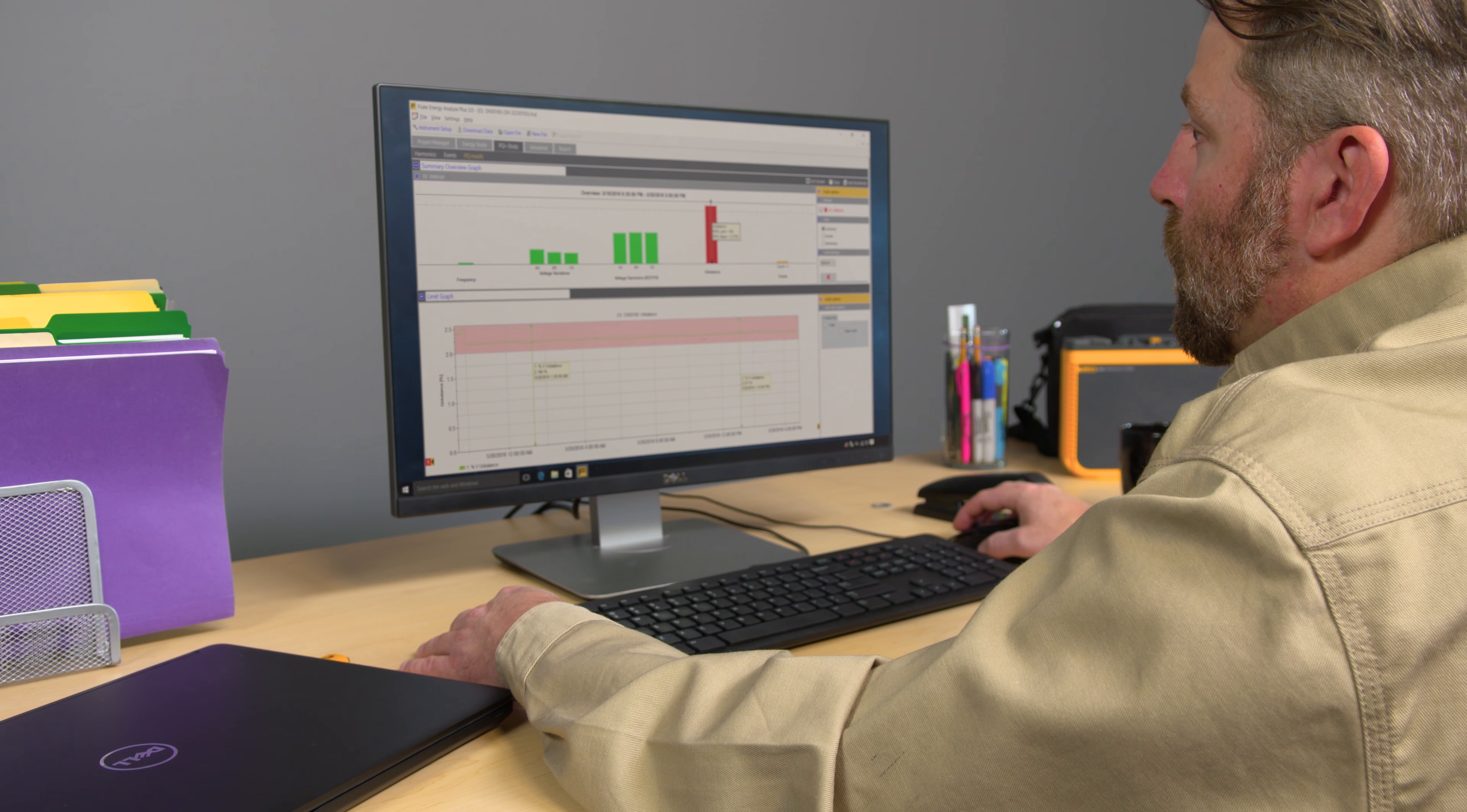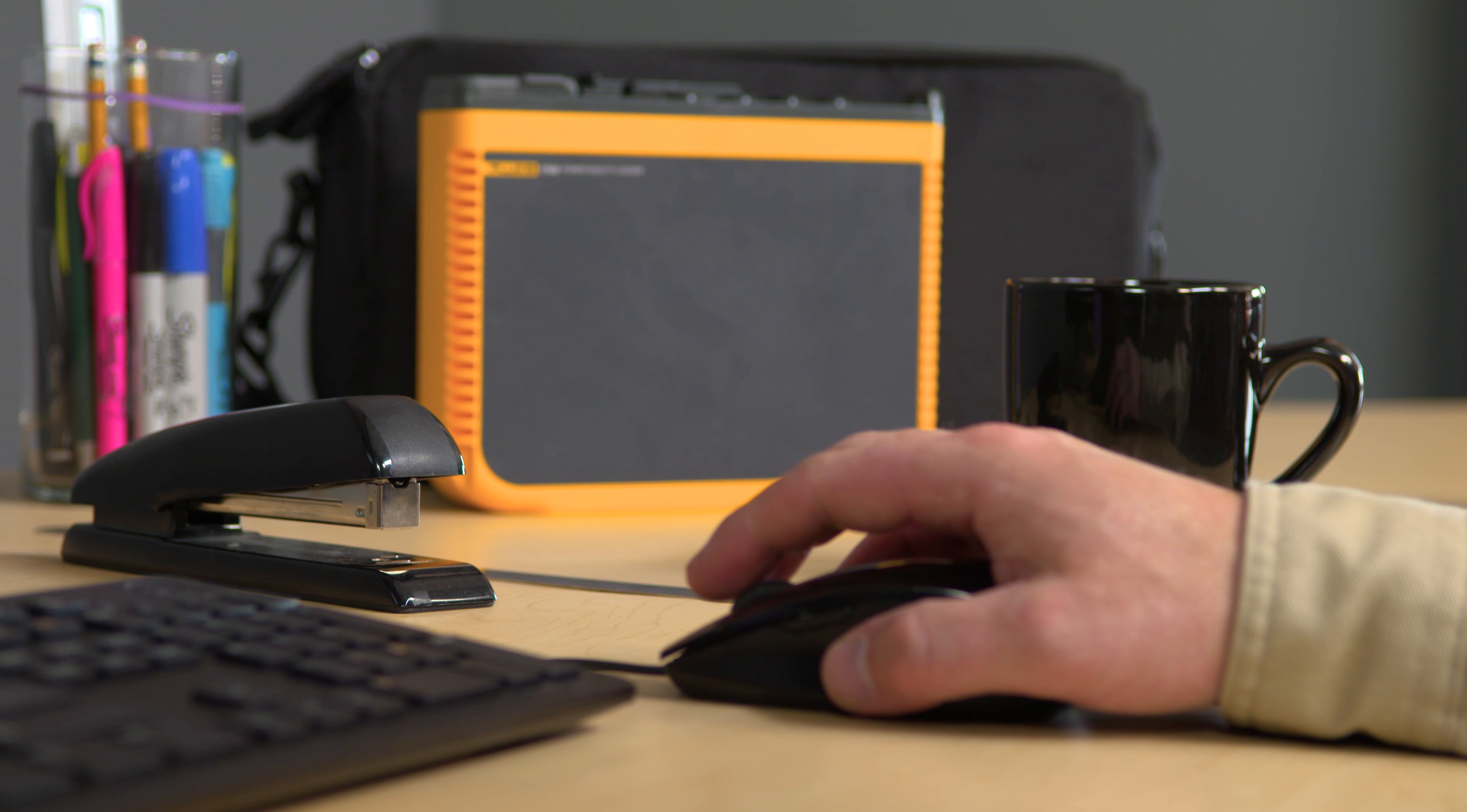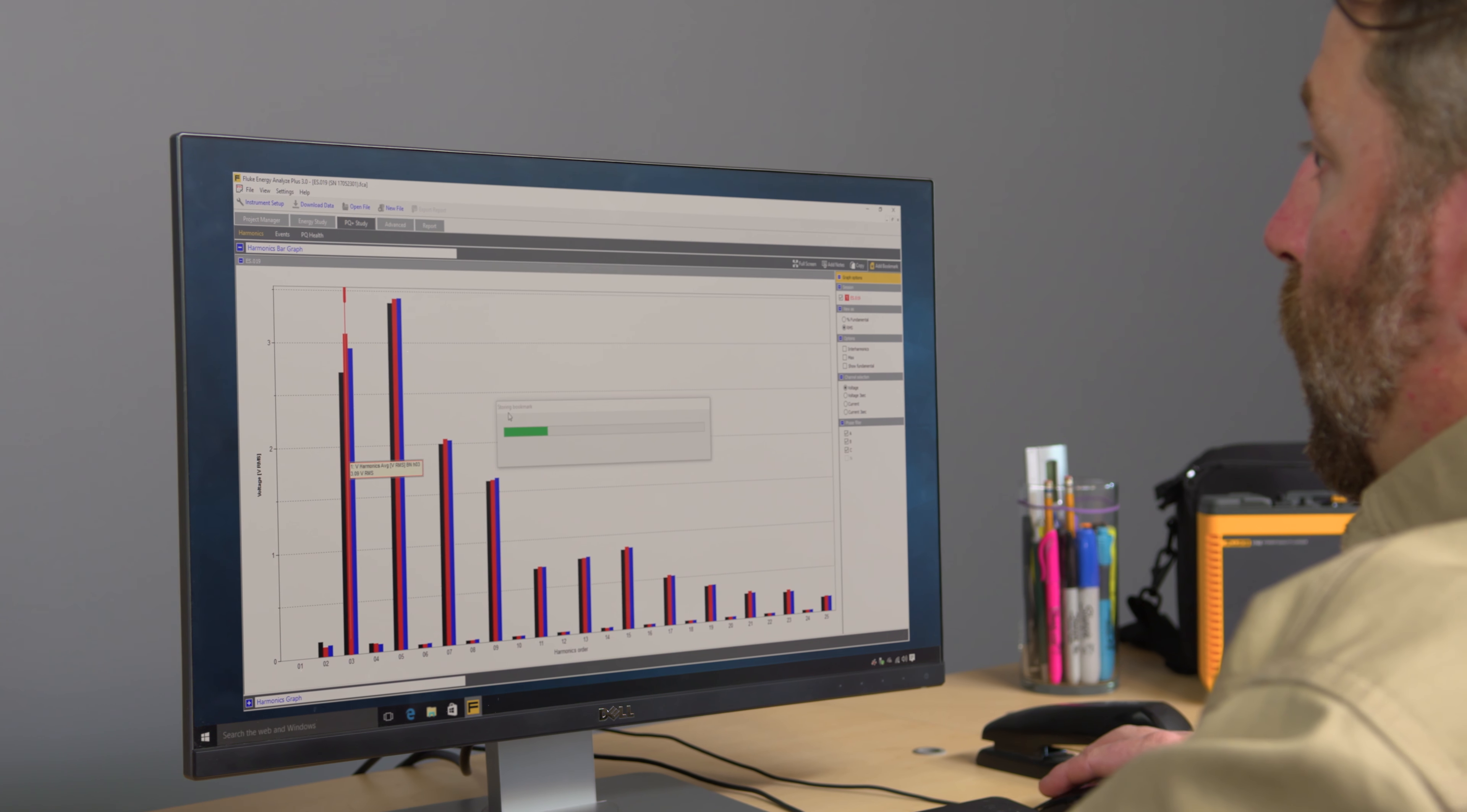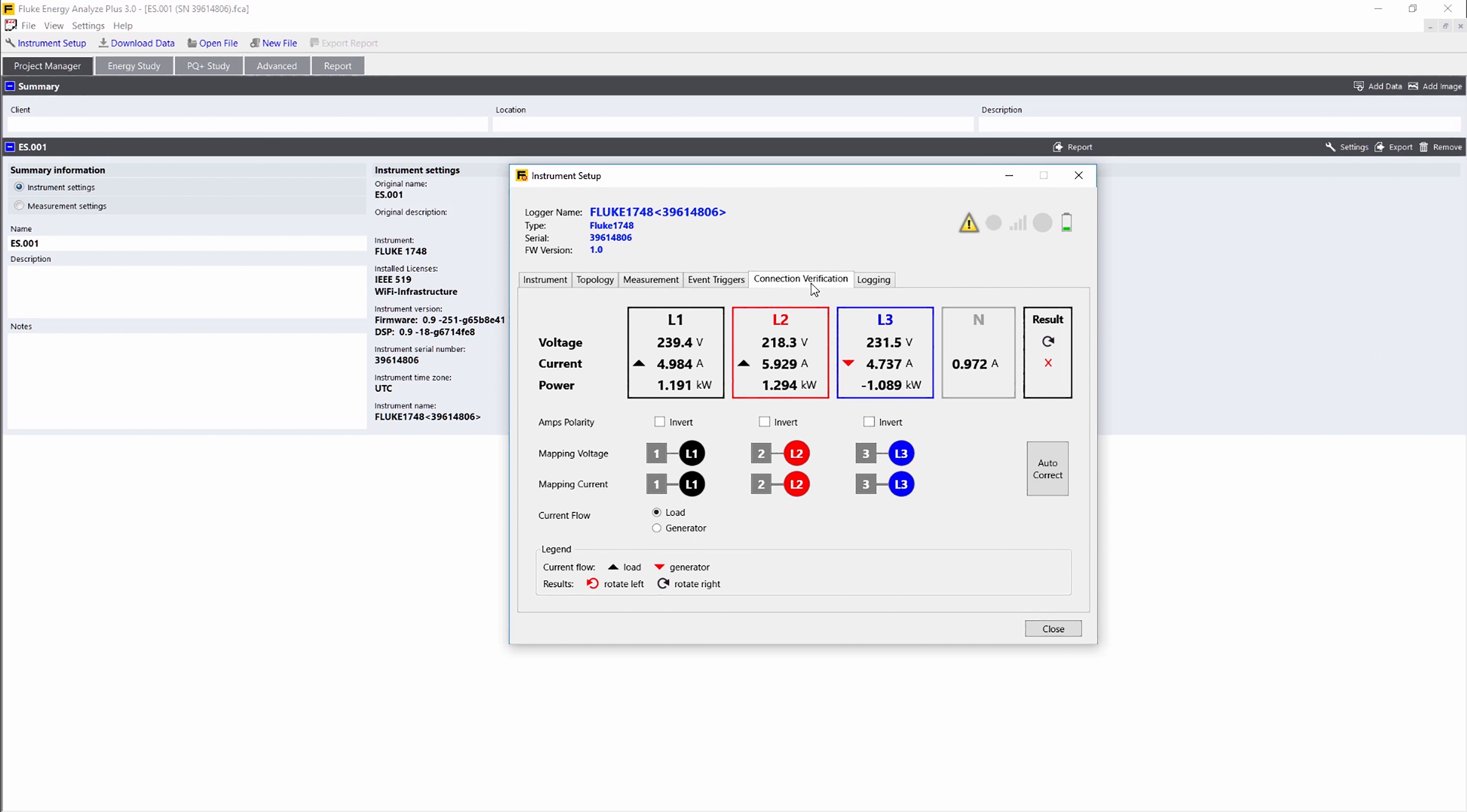Use the included Energy Analyze Plus software to manage all the setup and operational parameters, including the Advanced Intelligent Measurement Verification function. The Verification function displays connection errors and allows you to correct them digitally with the press of a button, all without removing test probes.